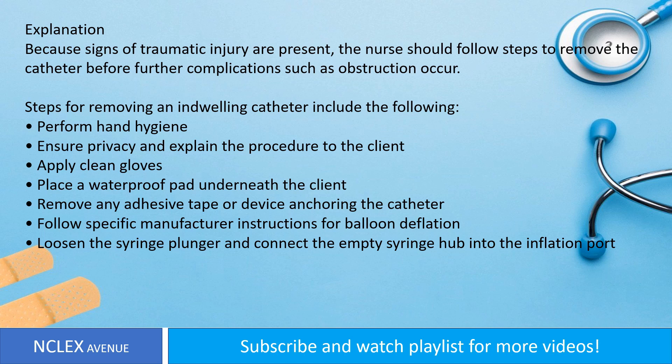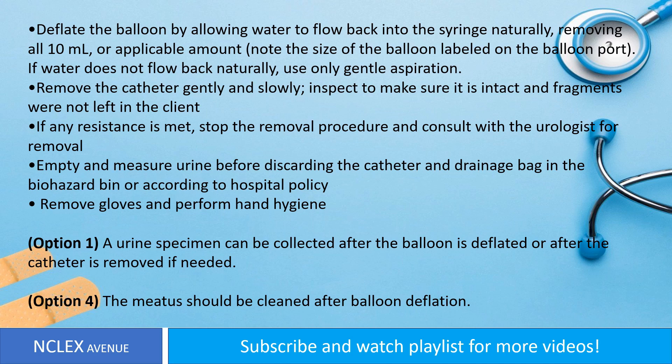Place a waterproof pad underneath the client and remove any adhesive tape or device anchoring the catheter. Follow specific manufacturer instructions for balloon deflation. Loosen the syringe plunger and connect the empty syringe hub into the inflation port. Deflate the balloon by allowing water to flow back into the syringe naturally, removing all 10 milliliters or applicable amount — note the size of the balloon labeled on the balloon port. Remove the catheter gently and slowly, inspecting to make sure it is intact and fragments were not left in the client.